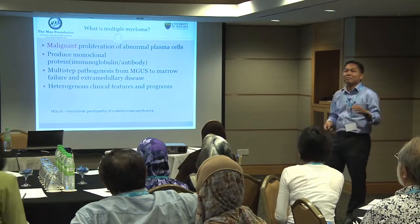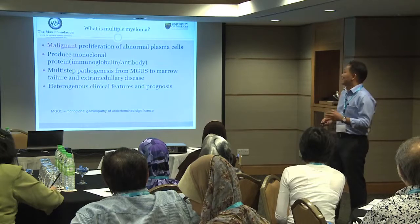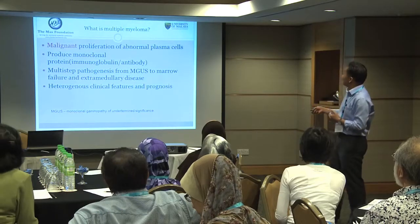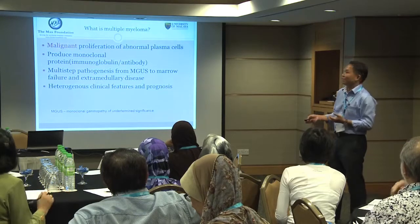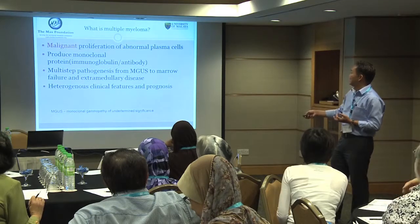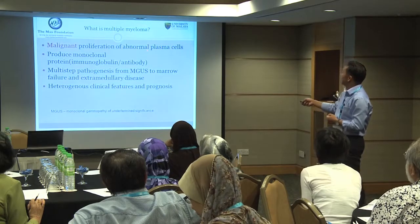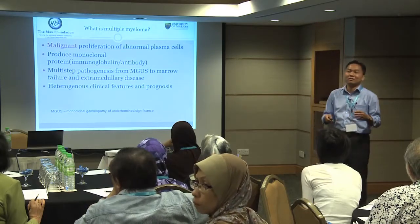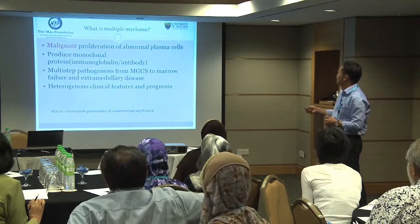Plasma cell disorder can start from what we call MGUS. MGUS is when some patients, especially older people, go for a medical check-up and blood test, and they notice they have monoclonal antibodies. But the amount is not a lot and they don't have any problems — this is the beginning of plasma cell disorder. MGUS will progress over the years and become multiple myeloma when the abnormal plasma cells cause organ damage to the body.